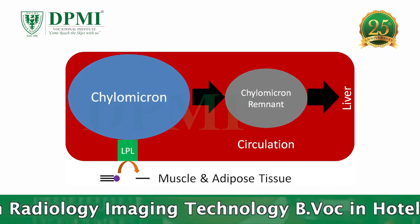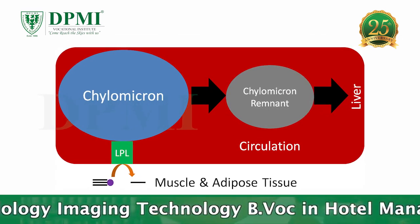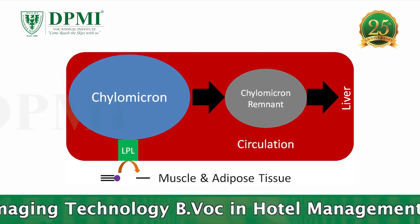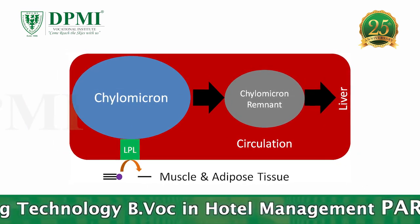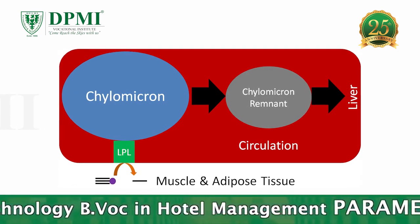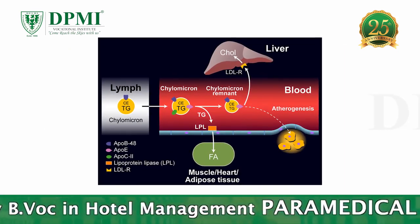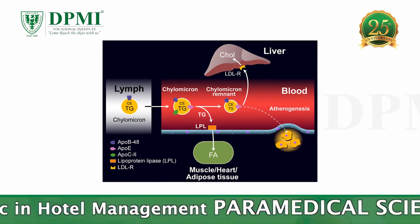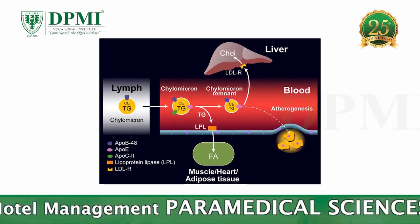Chylomicron Remnants: The removal of triglycerides from chylomicrons by peripheral tissues results in smaller particles called chylomicron remnants. Compared to chylomicrons, these particles are enriched in cholesterol and are pro-atherogenic.